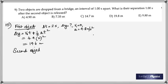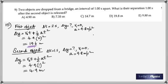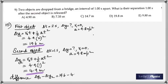The second object has only been travelling for 1 second — same equation with t = 1 — so it has fallen 4.9 meters. The separation between them is the difference: 19.6 − 4.9 = 14.7 meters.